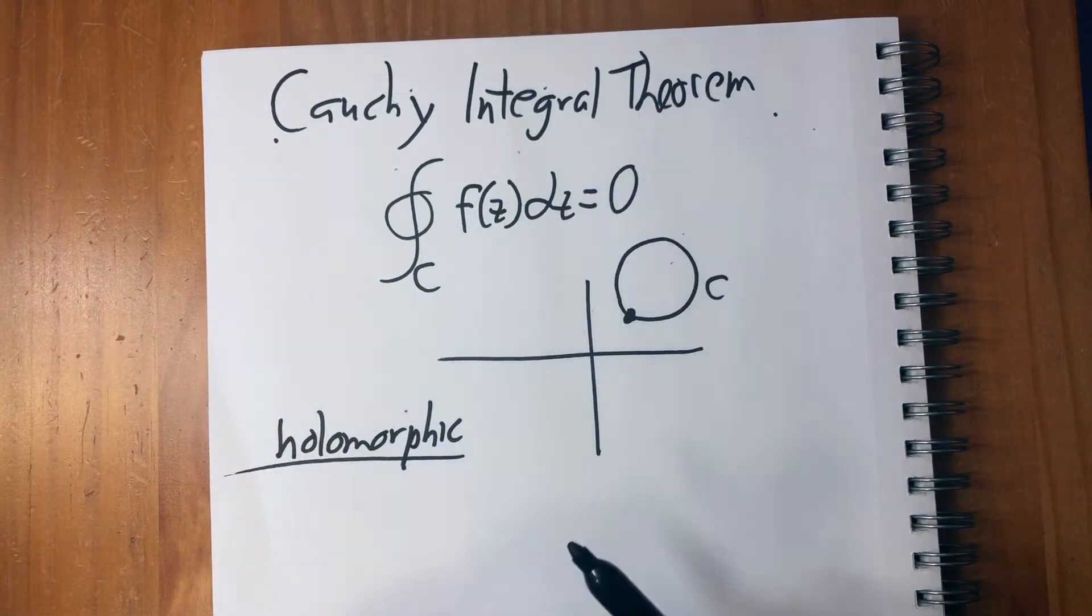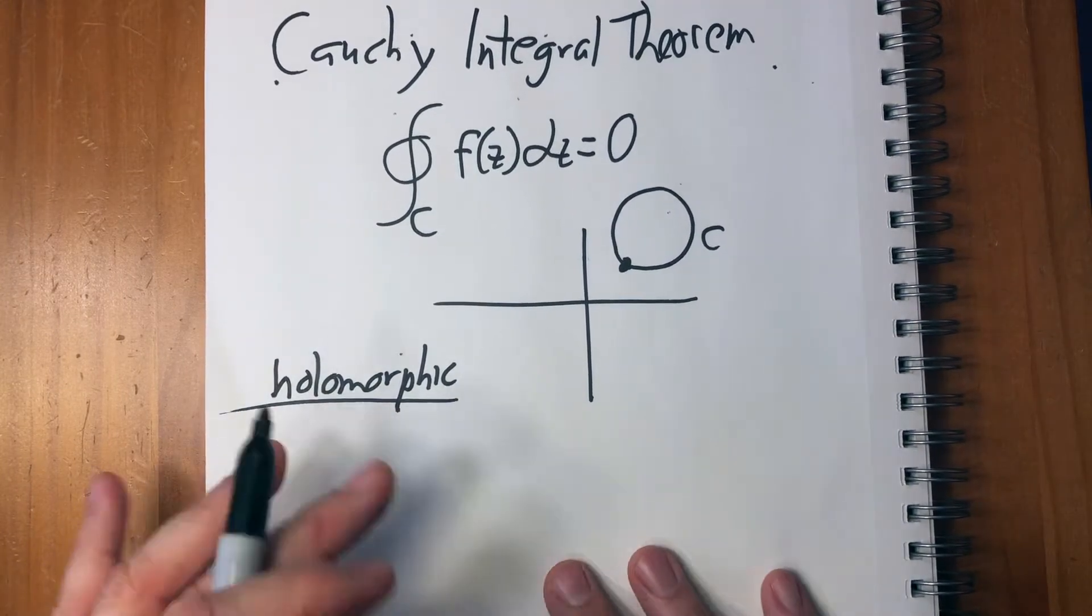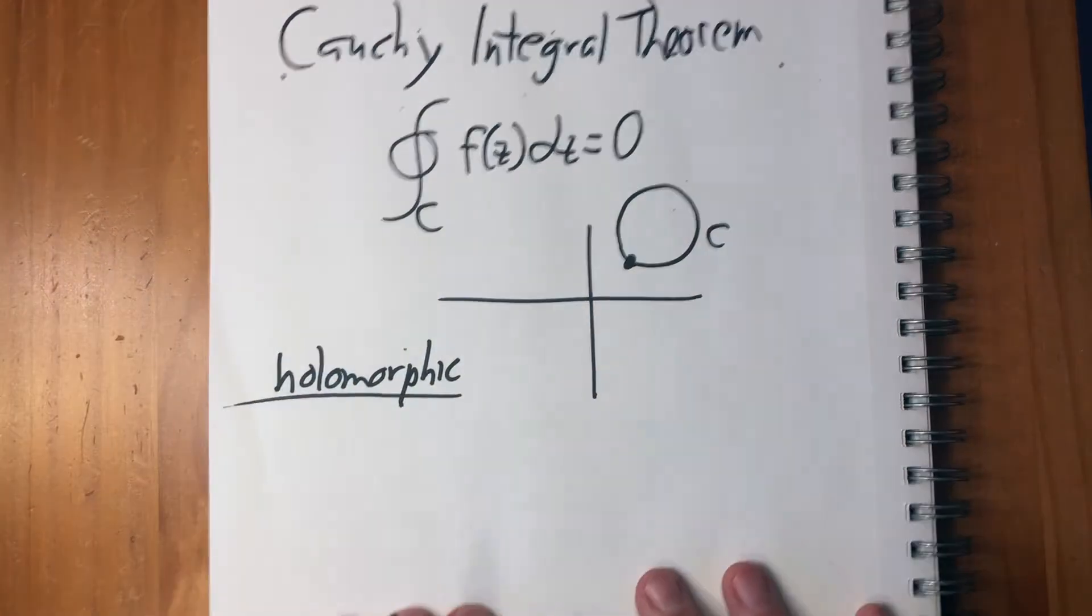It doesn't blow up anywhere. There's no poles or it doesn't go to infinity anywhere. So that's holomorphic and it can either be in a region or in the whole plane.